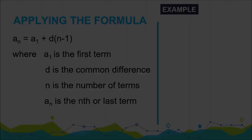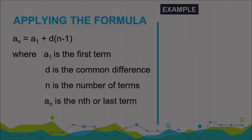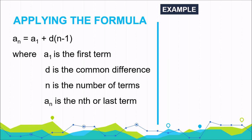The formula for finding the nth term of an arithmetic sequence is: a sub n equals a sub 1 plus d times the quantity n minus 1, where a sub 1 is the first term, d is the common difference, n is the number of terms, and a sub n is the nth or last term.